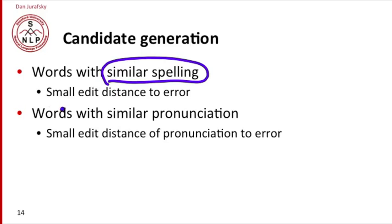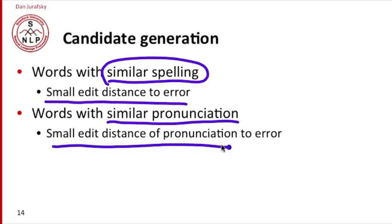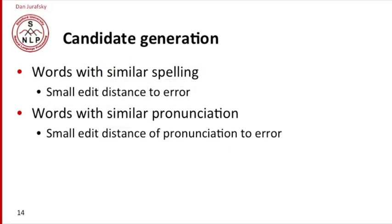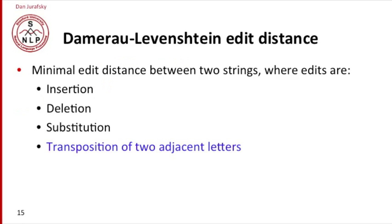We're going to operationalize similar spelling as having a small edit distance to the error. Remember with edit distance, we talked about the distance between two strings, the minimal number of edits that turns one string into another, where we defined an edit as an insertion, a deletion, or a substitution.